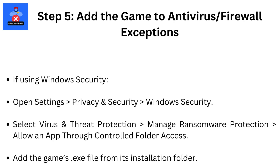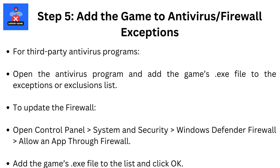Step 5: Add the game to Antivirus and Firewall Exceptions. If using Windows Security, open Settings, then Privacy and Security, then Windows Security. Select Virus and Threat Protection, then Manage Ransomware Protection, then Allow an App Through Controlled Folder Access. Add the game's .exe file from its installation folder. For third-party antivirus programs, open the antivirus program and add the game's .exe file to the Exceptions or Exclusions list.